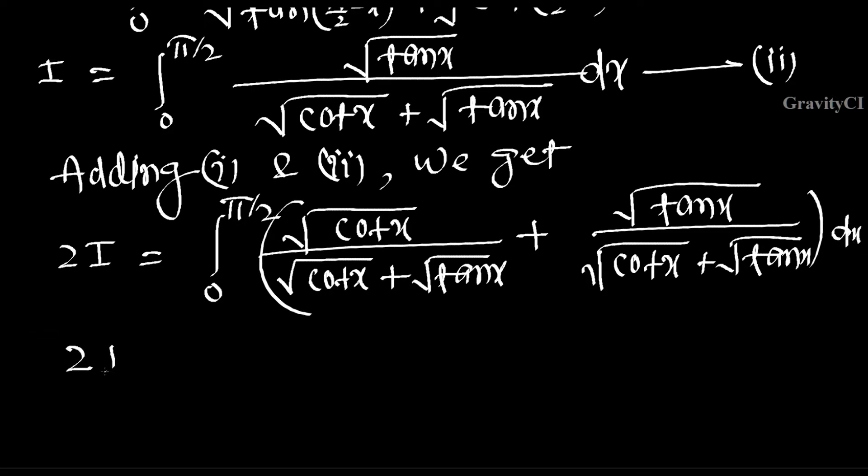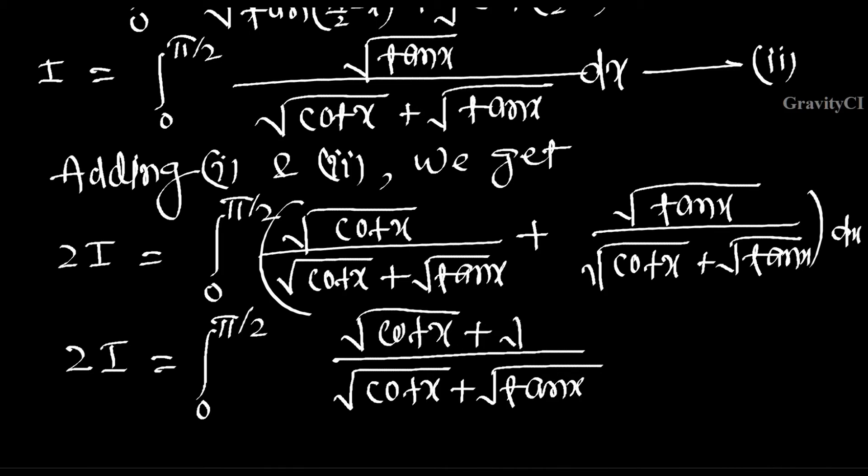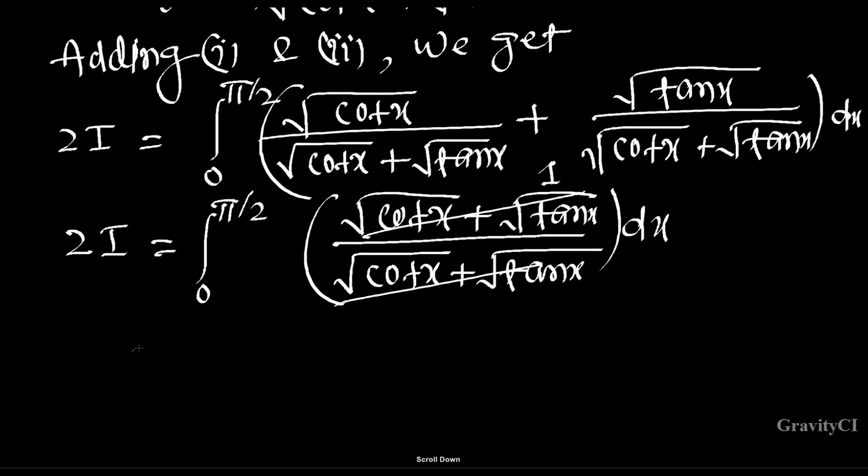So 2I equals integration 0 to pi/2 of root cot x plus root tan x upon root cot x plus root tan x dx. This cancels to equal 1.